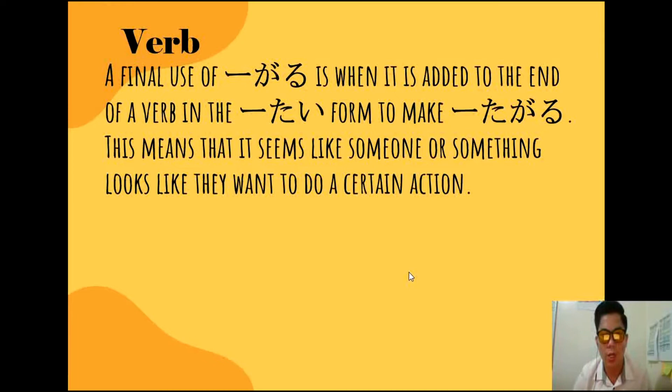For verb naman, a final use of Garu is when it is added to the end of the verb in the tai-form to make garimasu. Pag verb naman, ginagamitan lang natin ng Garu yung verb pag naka-tai form siya. This means that it seems like someone or something looks like they want to do a certain action. Kung yung verb tai-form is ginagamit natin sa sarili — for example, gusto nating sabihin na gusto kong sumakay ng tren, so magiging noritai siya.